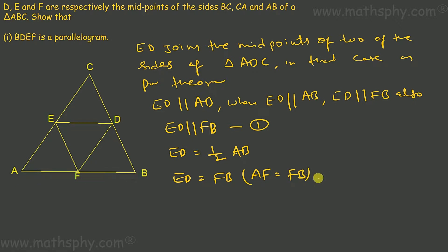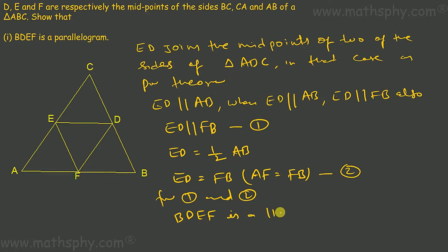In that case, ED equals FB — that's statement two. Now, ED is parallel to FB and ED is equal to FB. So from statements one and two, BDEF is a parallelogram. Alternatively, you can take EF parallel to BC because EF also joins the midpoints of two of the sides, so it would be parallel and half of the third side. So EF would be parallel to BD and EF would be equal to BD. Together with ED parallel to FB and ED equal to FB, this makes BDEF a parallelogram.